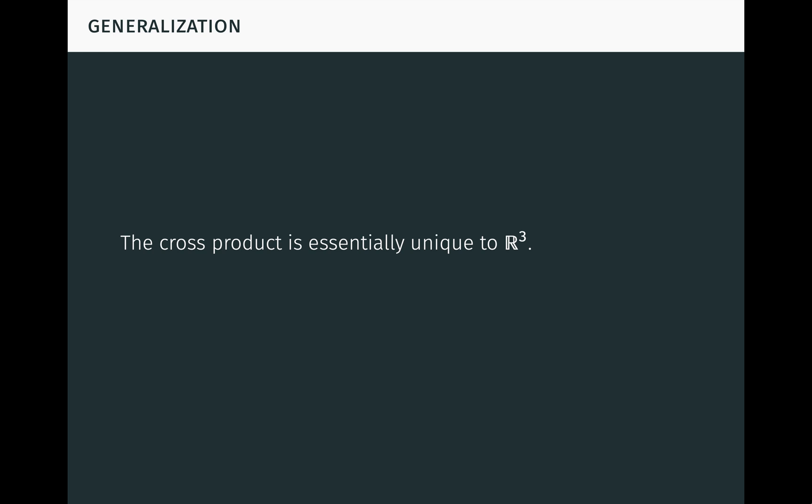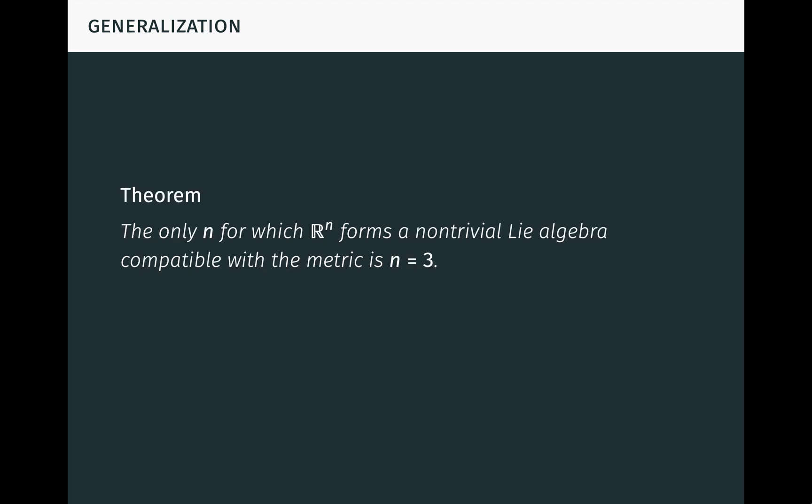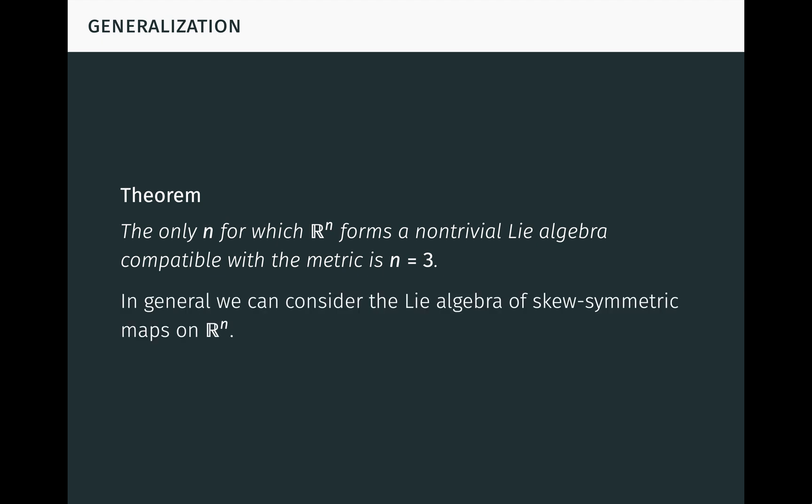The cross product is essentially unique to R3. Intuitively, this is because R3 is the only space in which length is dual to area. As we saw, the cross product represents or encodes two-dimensional oriented area as one-dimensional oriented length through duality. This is only possible in a space of dimension 3 because 2 plus 1 equals 3. Formally, the only n for which Rn forms a non-trivial Lie algebra compatible with the metric is n equal to 3. However, we saw earlier that when n equals 3, the Lie algebra is isomorphic to the Lie algebra of skew-symmetric maps on R3. In general, we can consider the Lie algebra of skew-symmetric maps on Rn for any n, so this provides one way of generalizing the cross product.